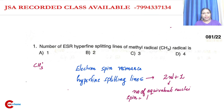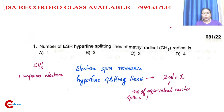Methyl radicals have one unpaired electron. This is one unpaired electron, and the proton factor: how many protons? Three equivalent protons.